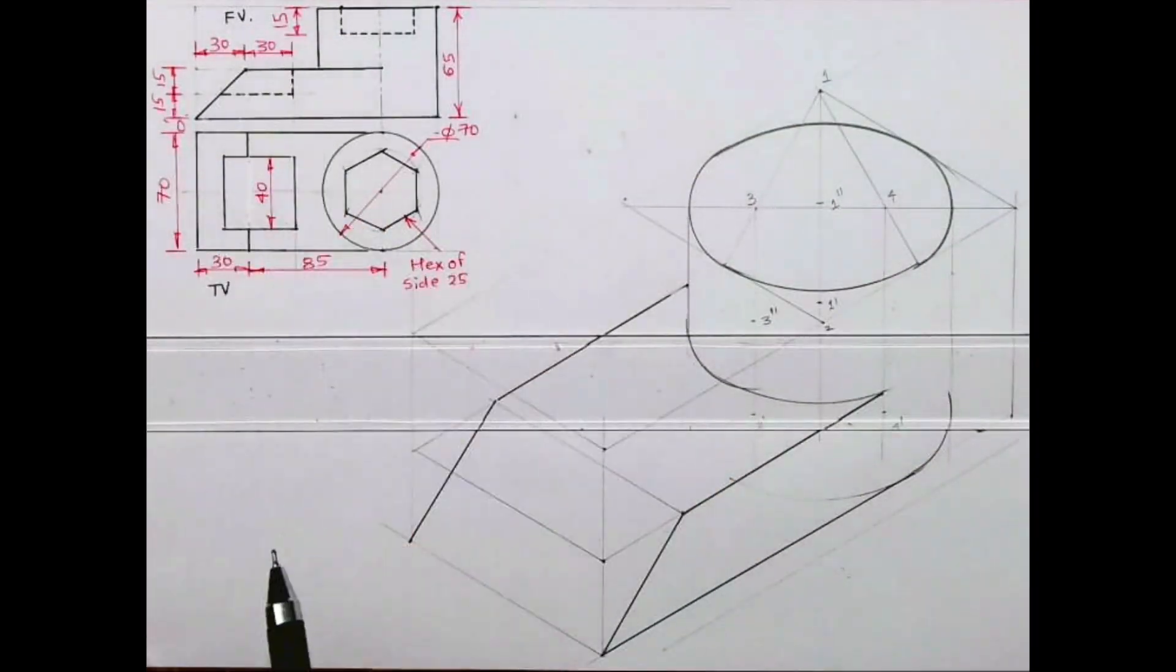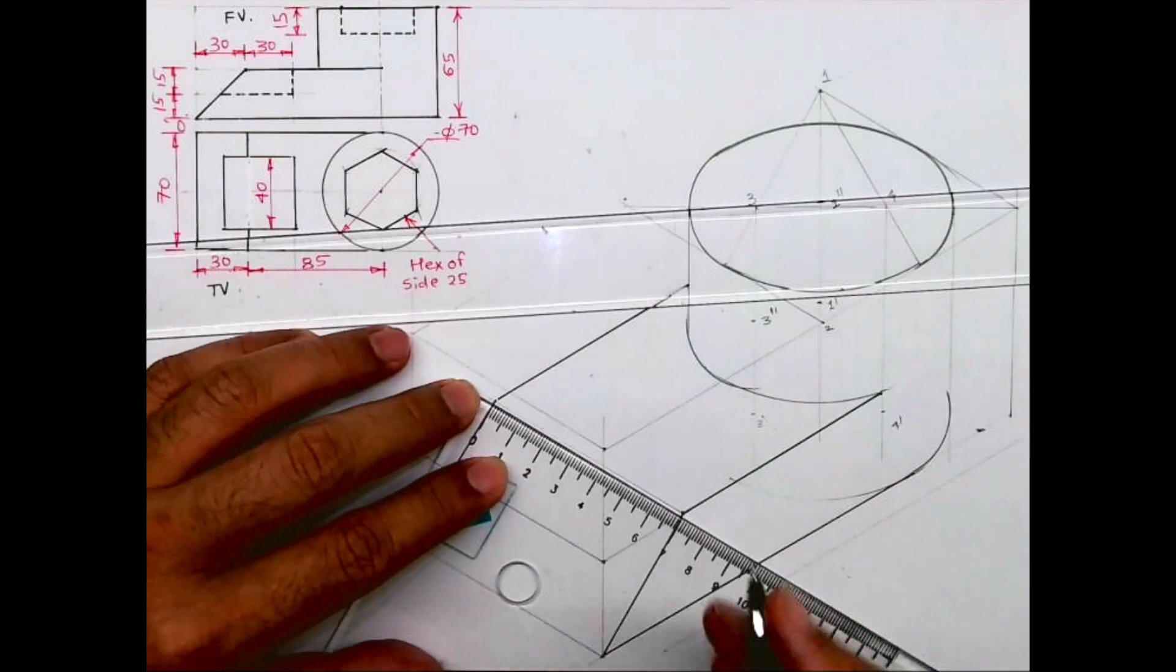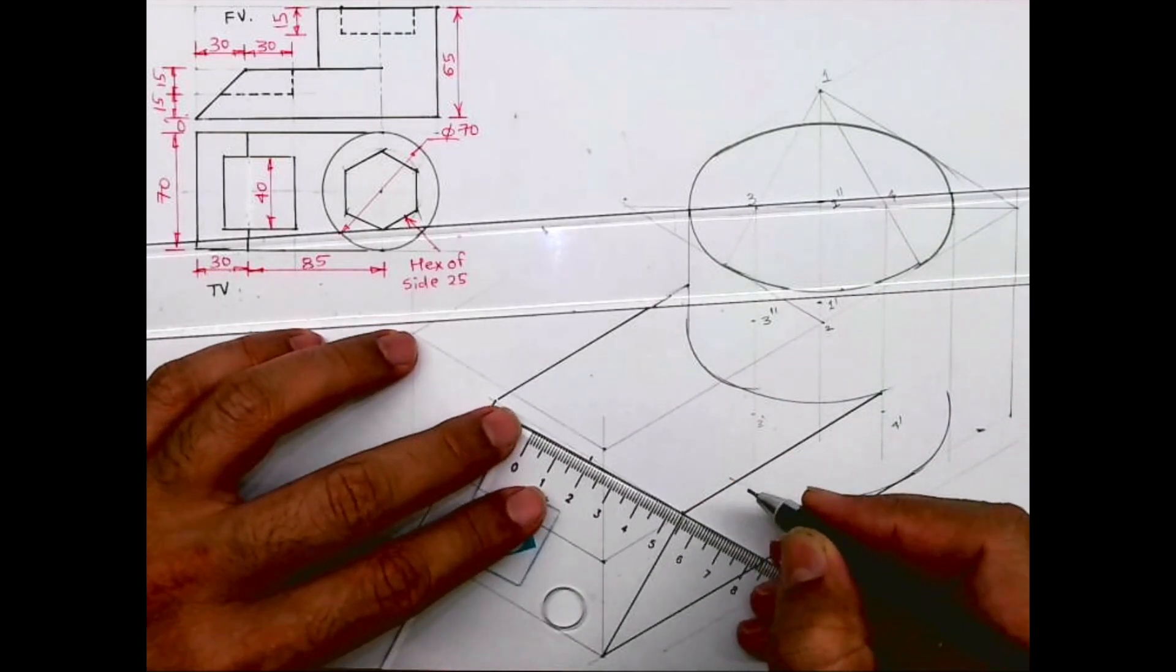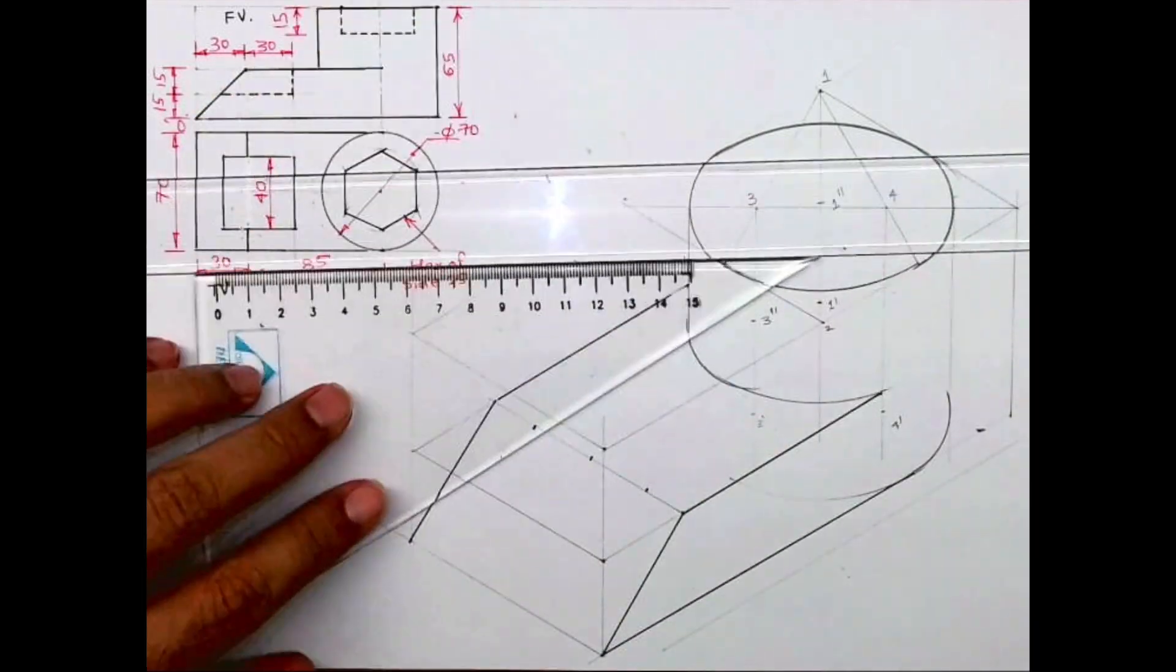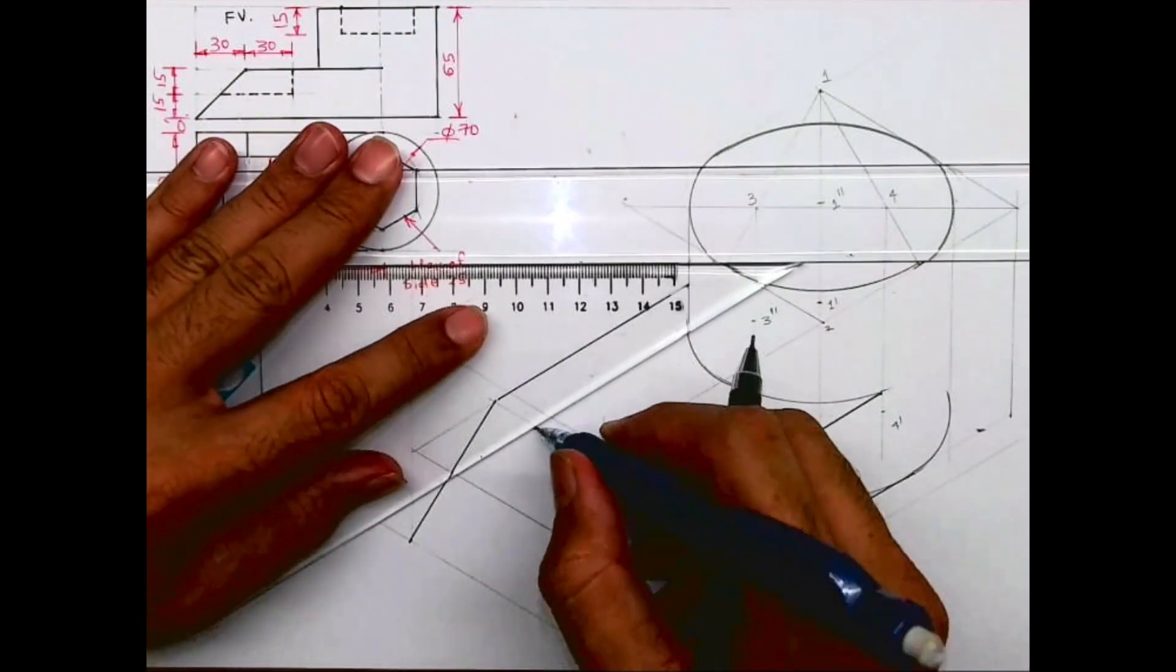Then after this, we have to mark this distance. How much is this? This is 70, you take midpoint and then take 20, 20. Then this goes inside by 30.